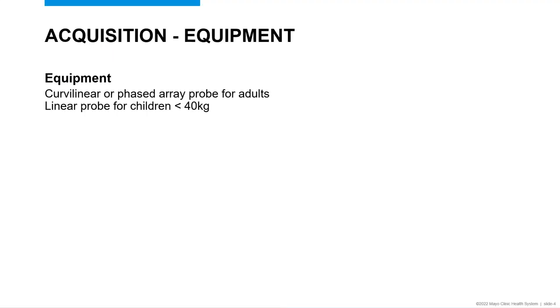What materials do we need? Just an ultrasound and the appropriate probe. We use a curvilinear or phased array probe for adults, or if you have a child underneath 40 kilograms, you can use a linear probe.